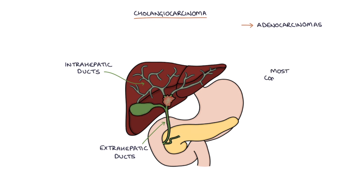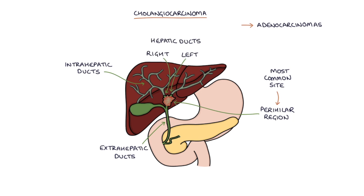The most common site is the perihilar region, which is where the right and the left hepatic ducts have joined to become the common bile duct just after they leave the liver.